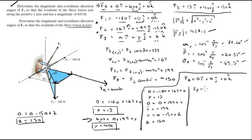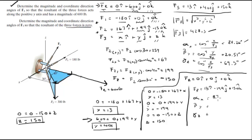So F3 in this case equals 13 i minus 199 j plus 150 k. Before calculating the direction angles, calculate the magnitude using the same formula — it comes out to be 249.5. Then the direction angles come out to be 87 degrees, 142.9 degrees, and 53.04 degrees.